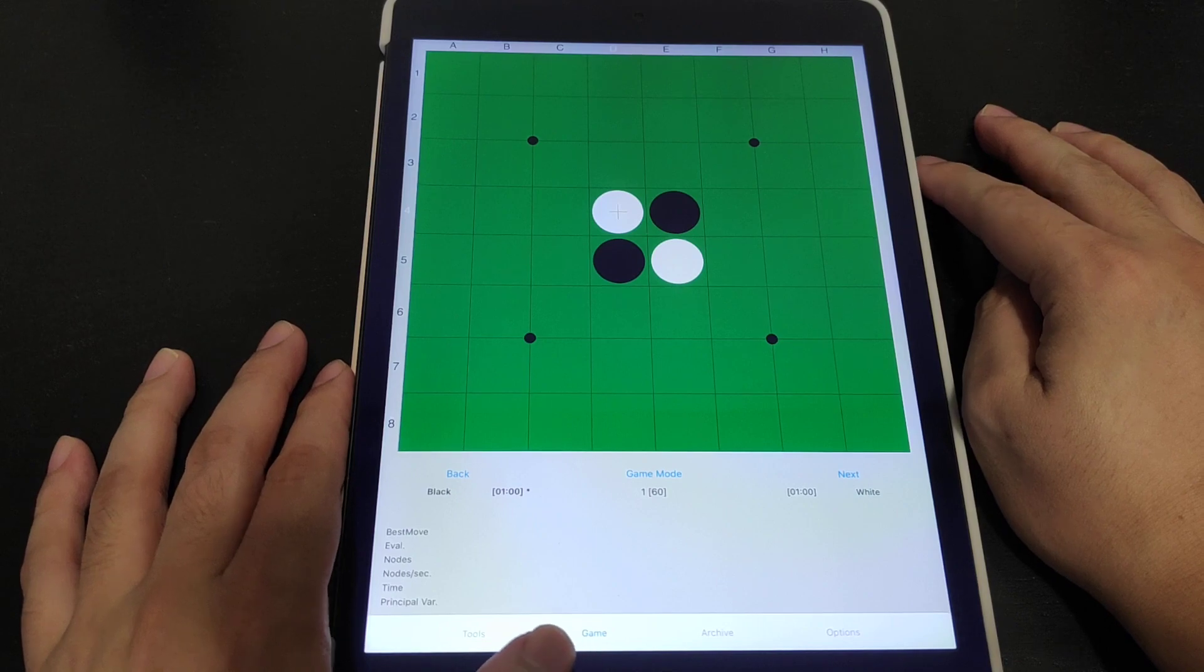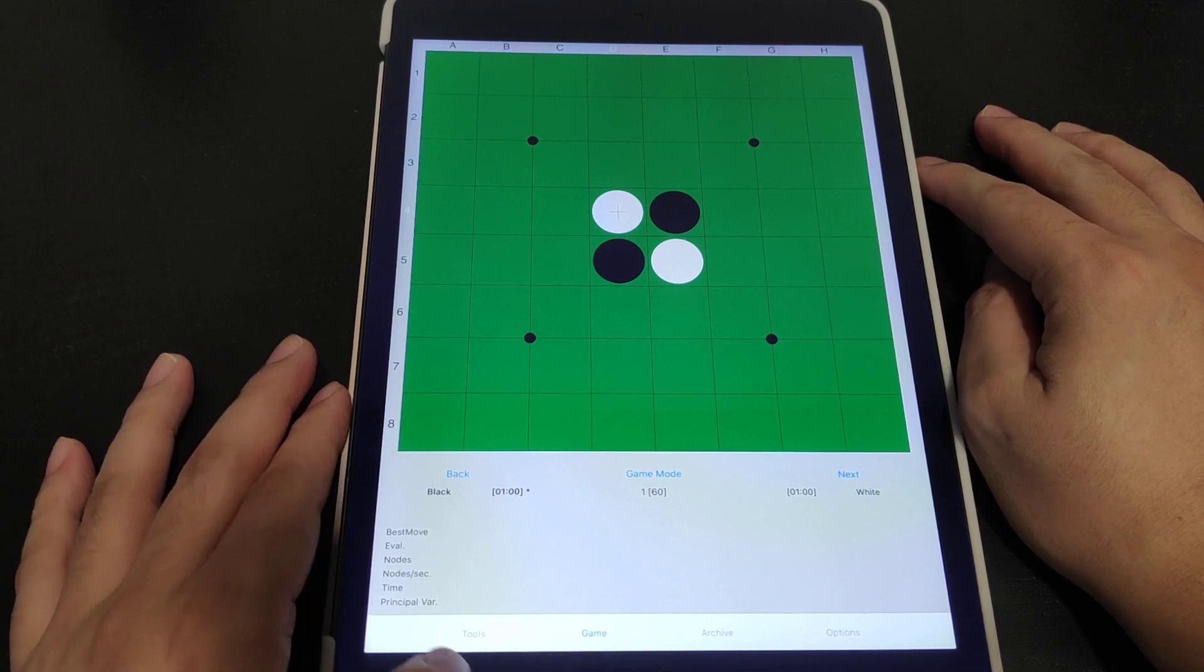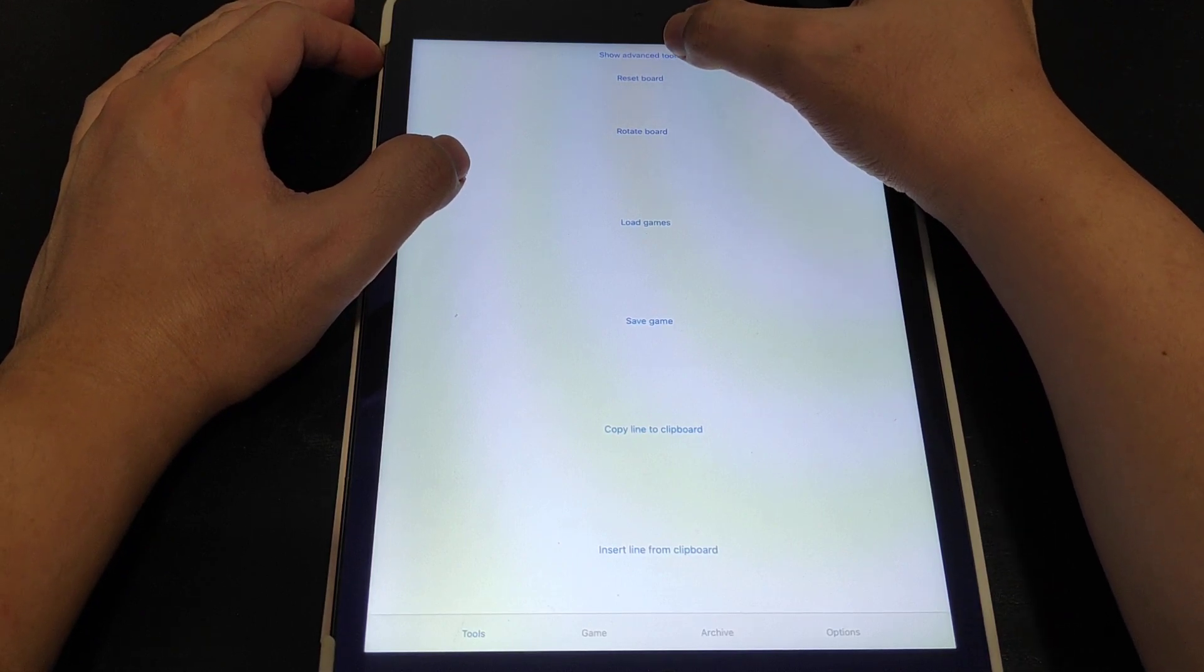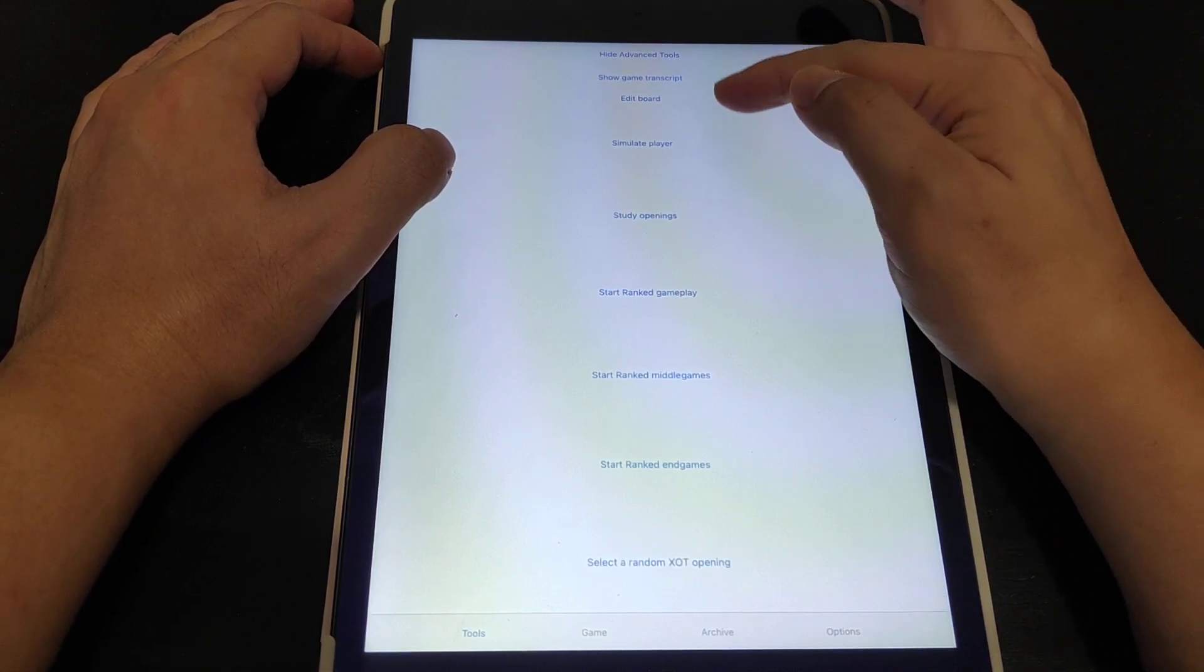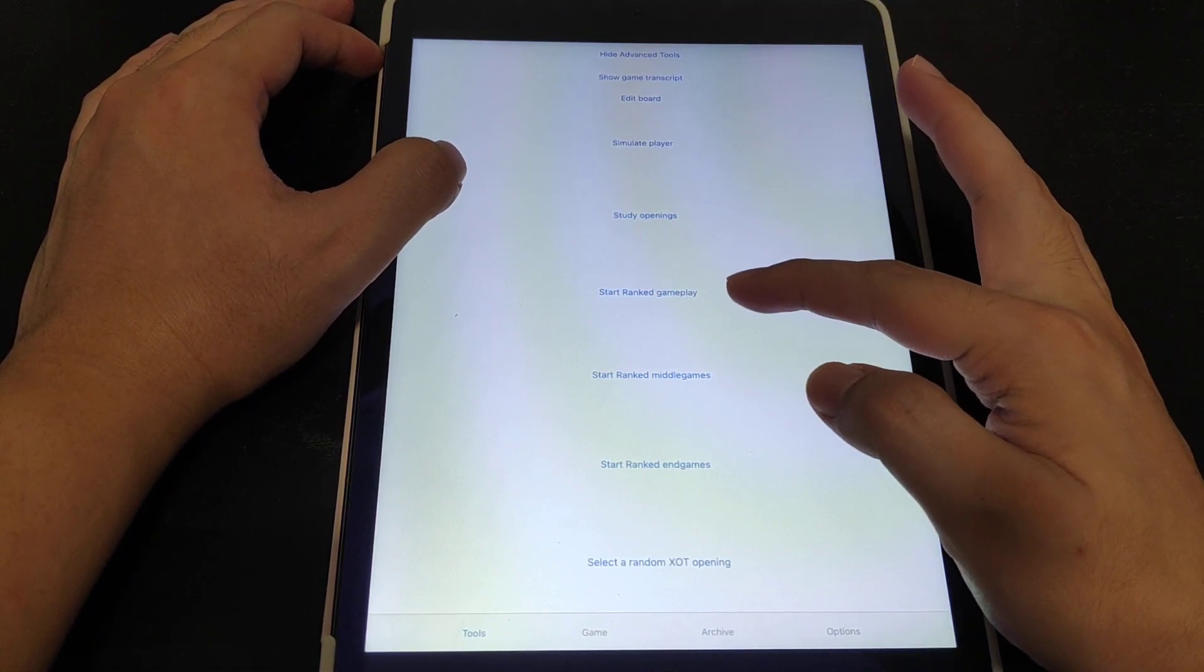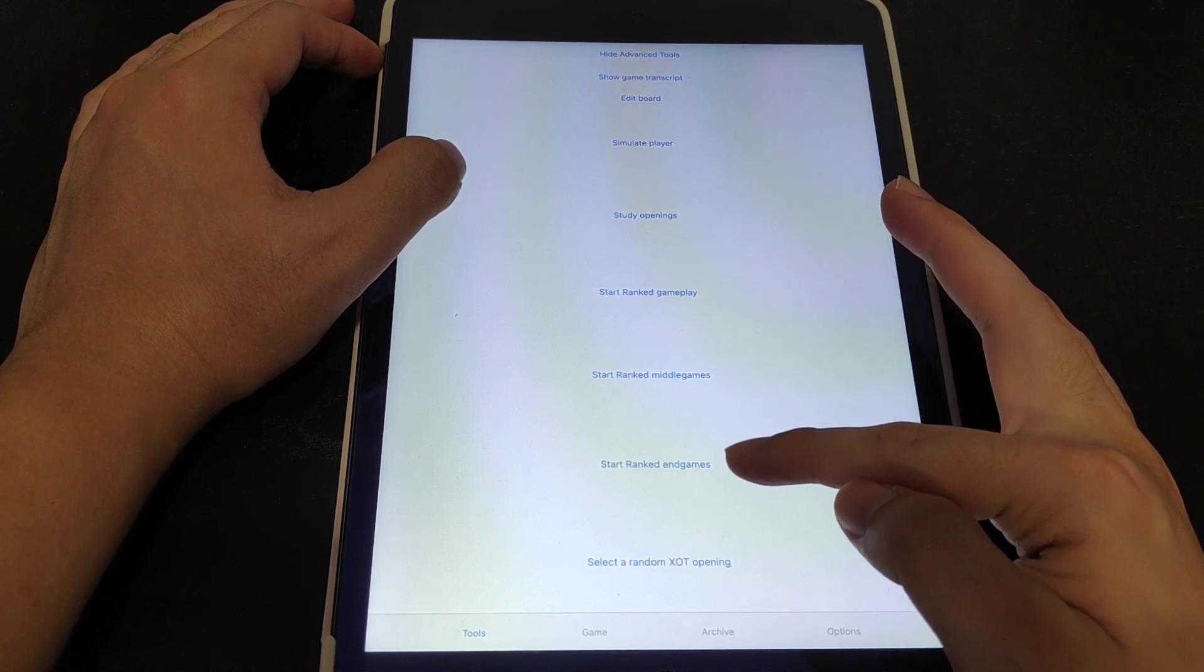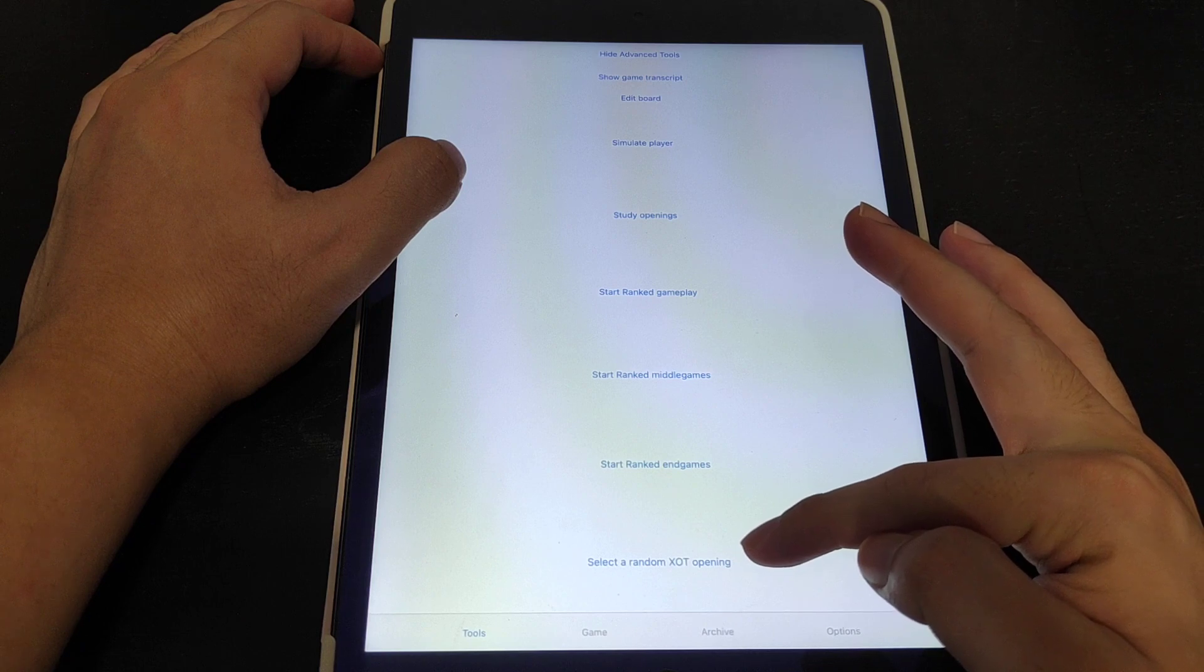How you can access these puzzles within the SEO application is just go to Tools on the left bottom tab, go to Show Advanced Tools and you can see there's Start Rank Gameplays, Study Openings, Start Rank Middle Game, Start Rank End Game, select a Random XOT Opening.